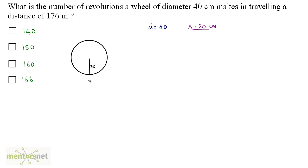Let us calculate how much distance this circular wheel moves when it completes one revolution. Consider this point — when this wheel completes one revolution, this point goes a complete round and comes back to its original position. In other words, this point has travelled the circumference of the circle. And in that process, while the wheel makes one revolution, it has travelled a distance equal to its own circumference.